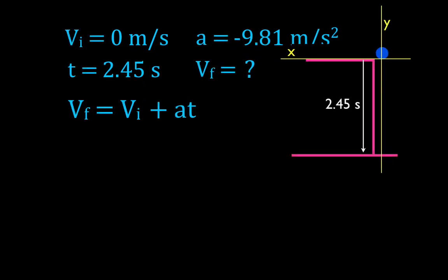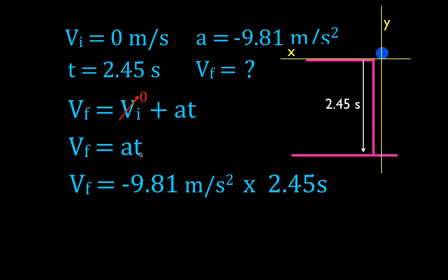We go to the next slide, take that equation with us along with all our information and diagram, and now we simply plug the values in. We're solving for the final velocity, and this equation is already solved for it. Note that the initial velocity is zero — generally for free fall, you're holding something and dropping it, not throwing it down. So the equation simplifies to: final velocity equals acceleration times time. We plug in negative 9.81 meters per second squared times 2.45 seconds, and we get a final velocity of negative 24.03 meters per second.